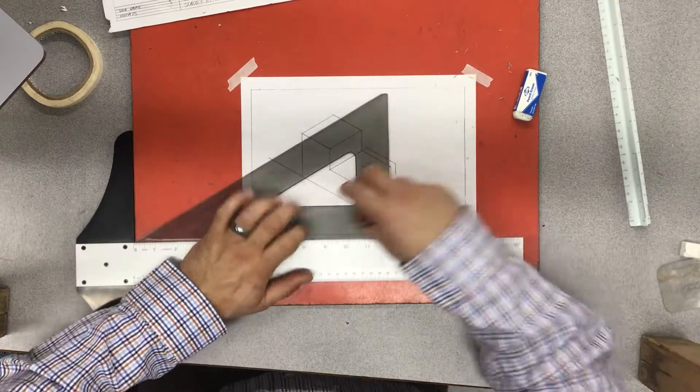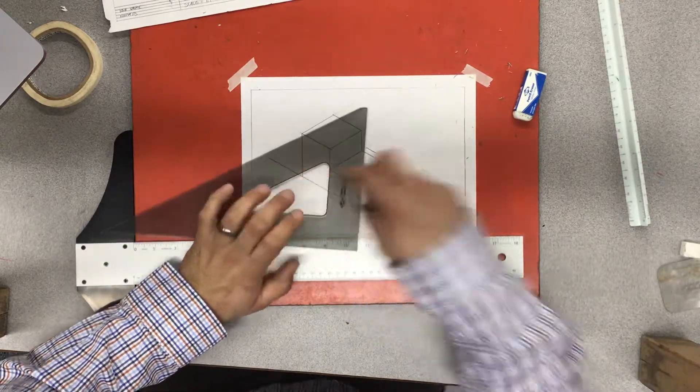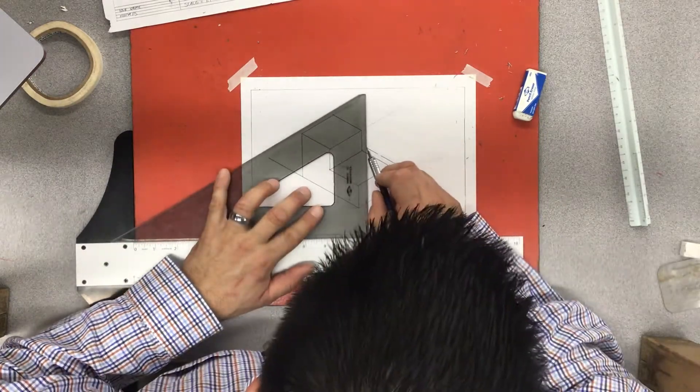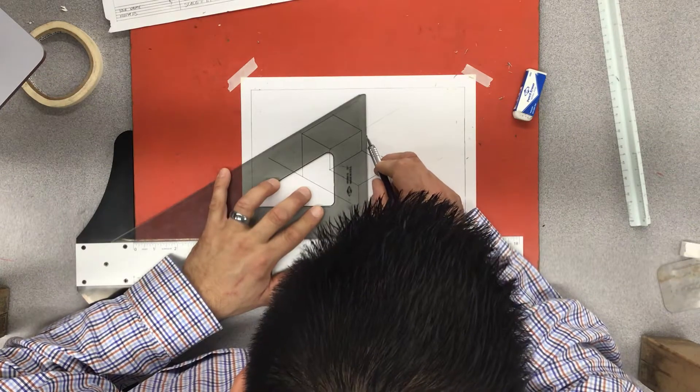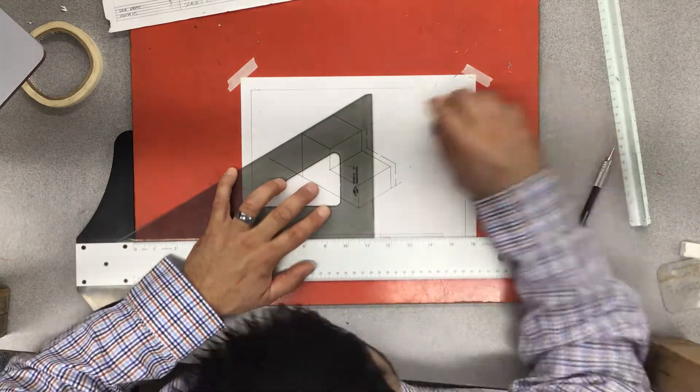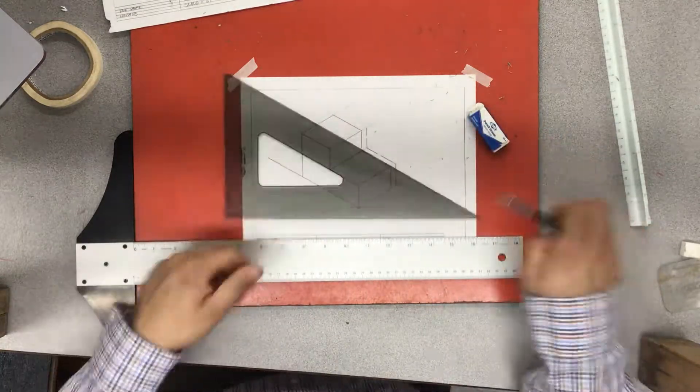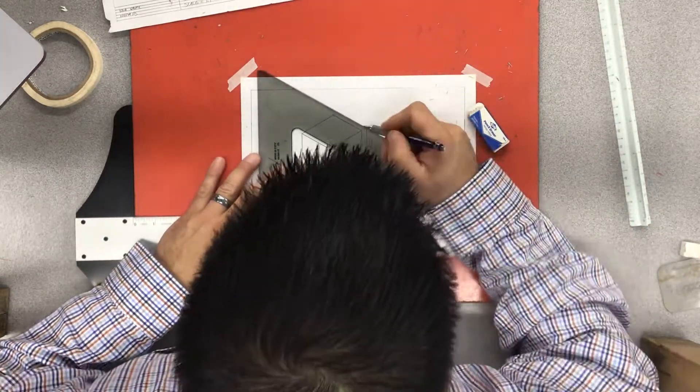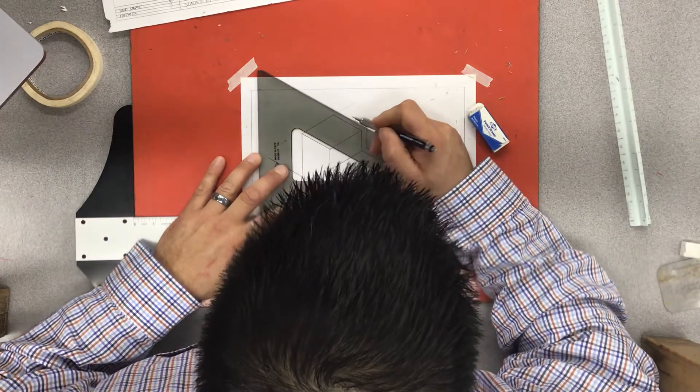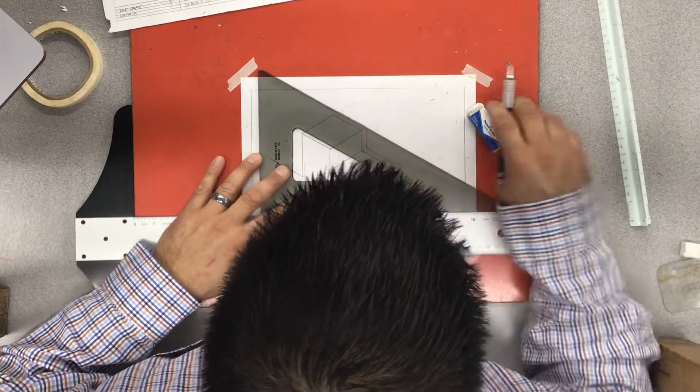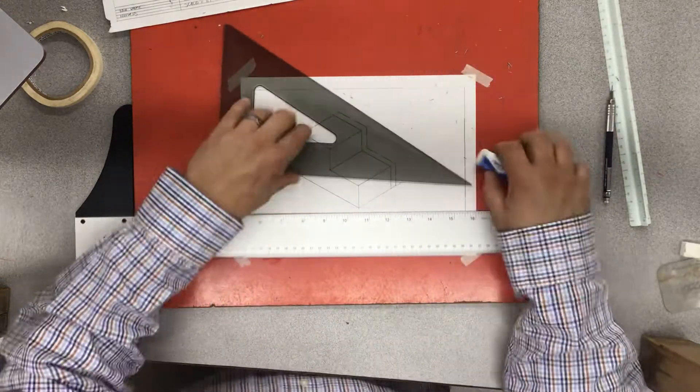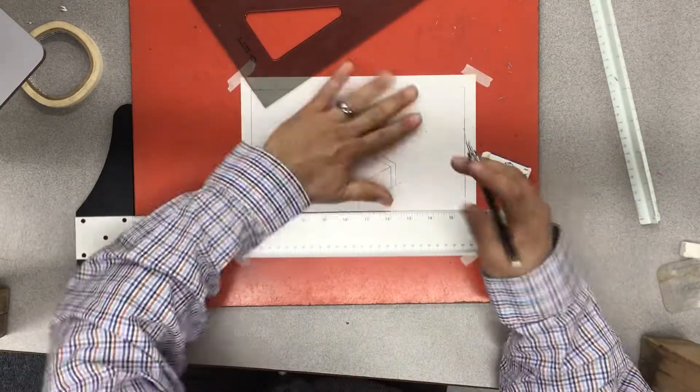So both of those lines are the same length. Spin it around again. Go over to my quarter inch mark, draw my dimension line. Slide over to the half inch mark, erase the extra. One more spin around. Dimension line, slide it over to the end, erase the extra. And you've got your extension line.